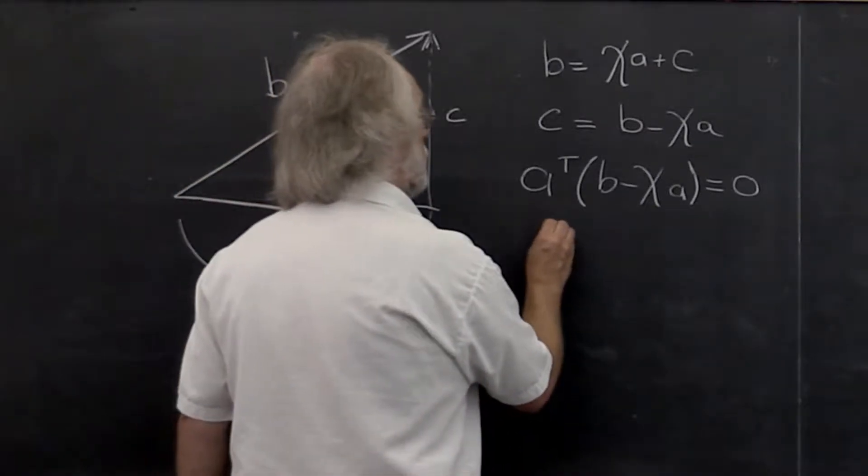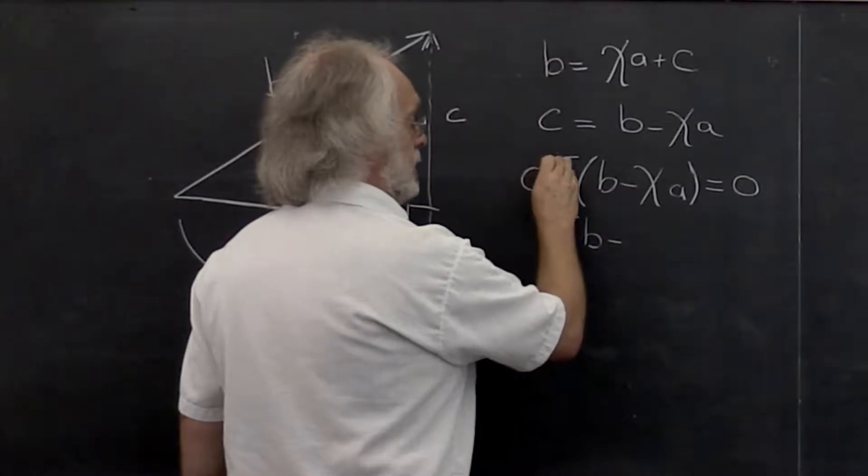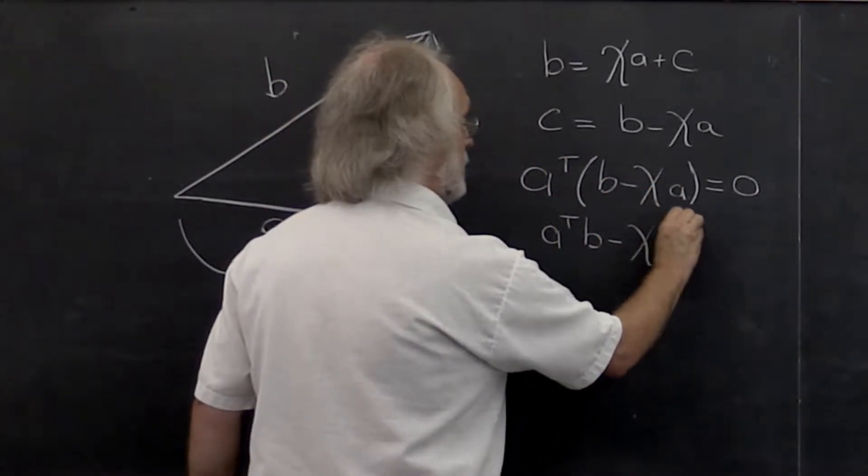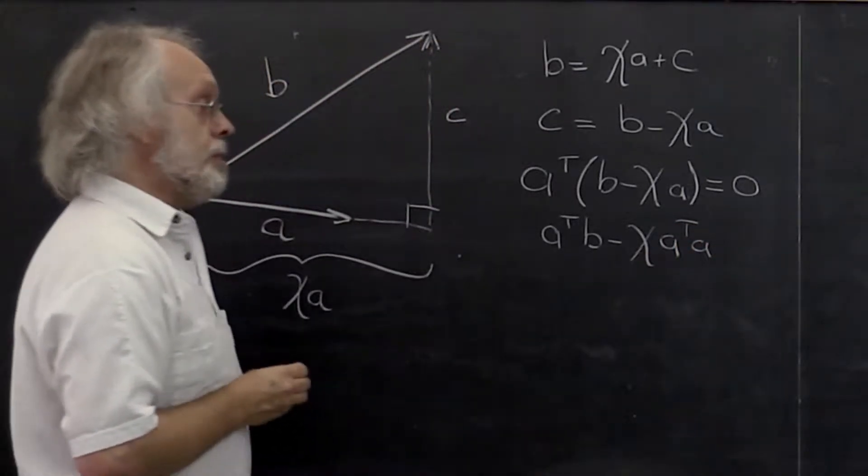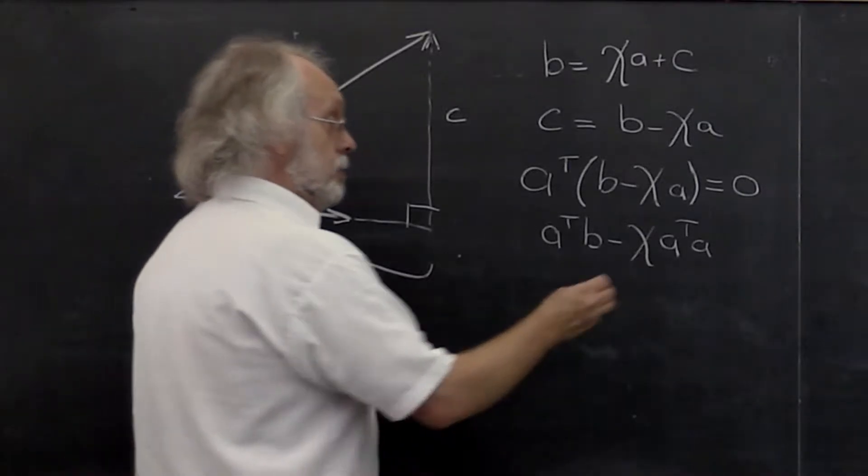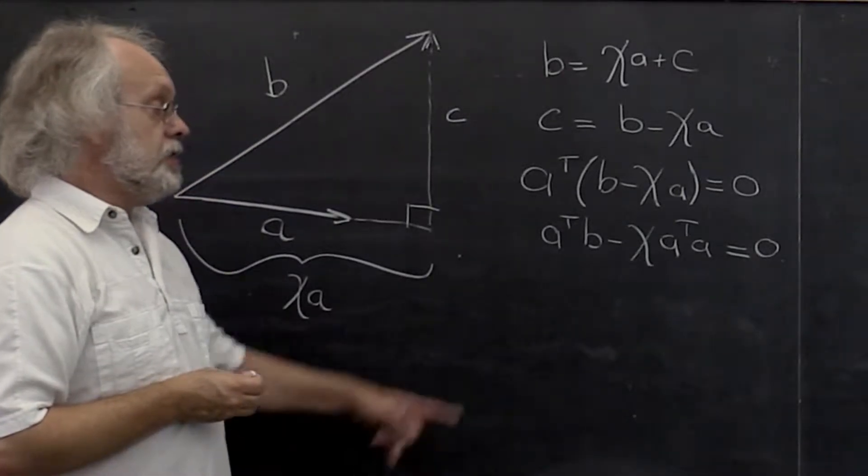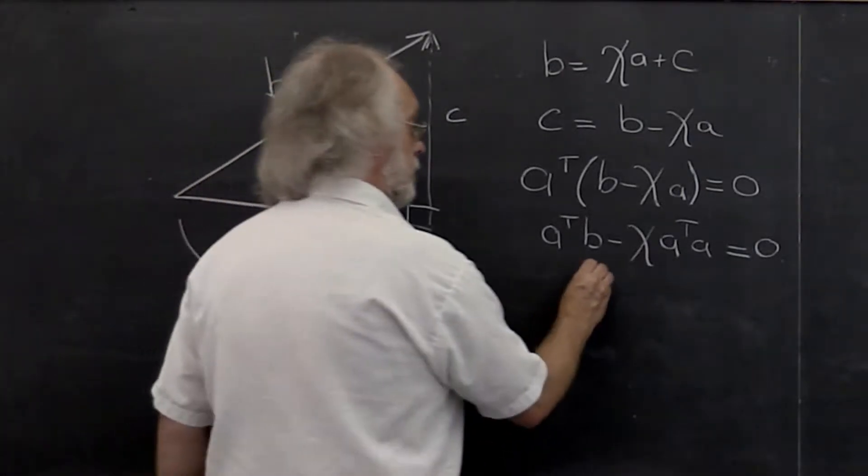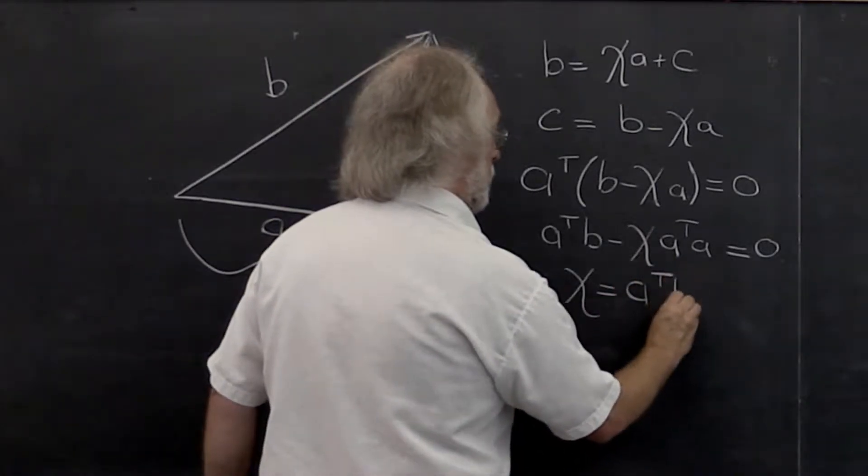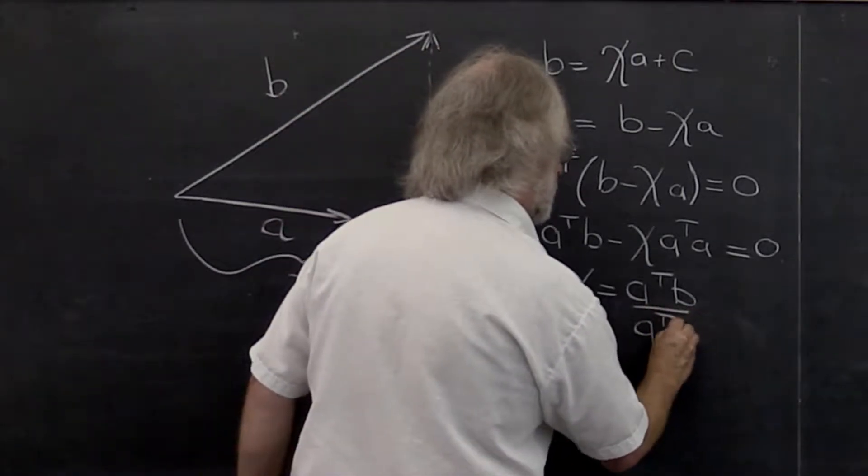Multiplying that out, we get that A transpose times B minus chi times A transpose times A, the dot product of A with itself, must be equal to zero. And if we then solve for chi, we find that chi is equal to A dot product with B divided by A dot product with itself.